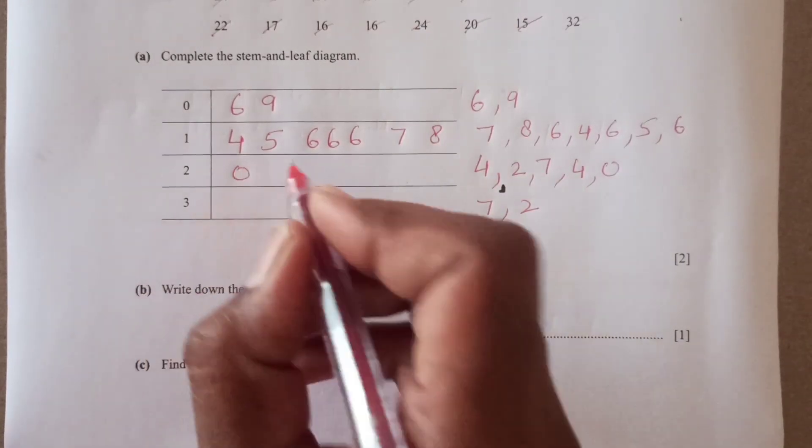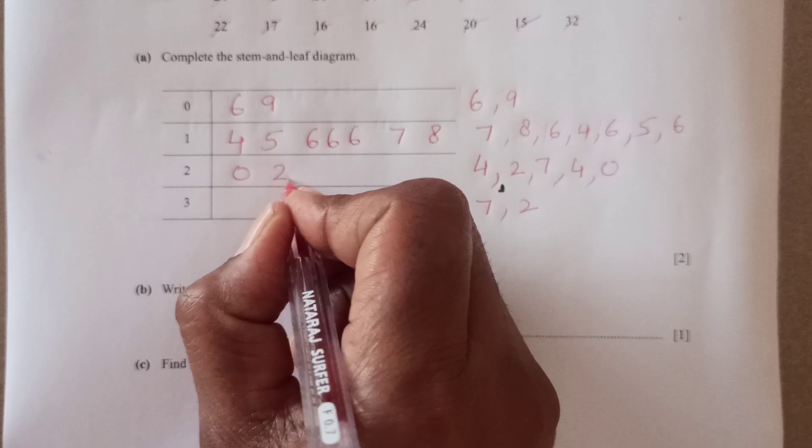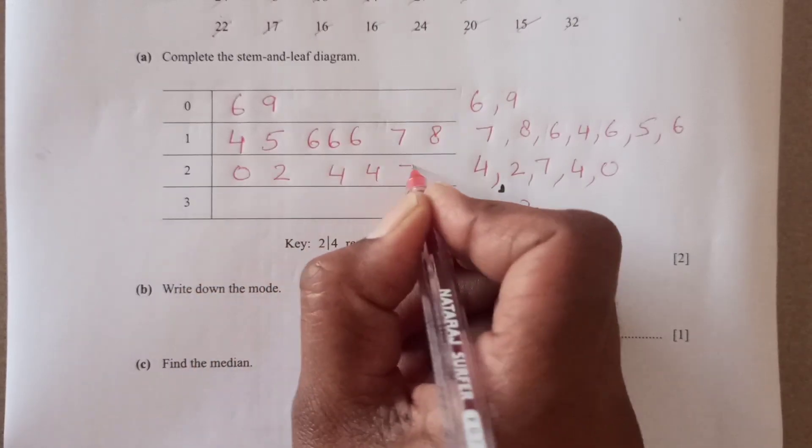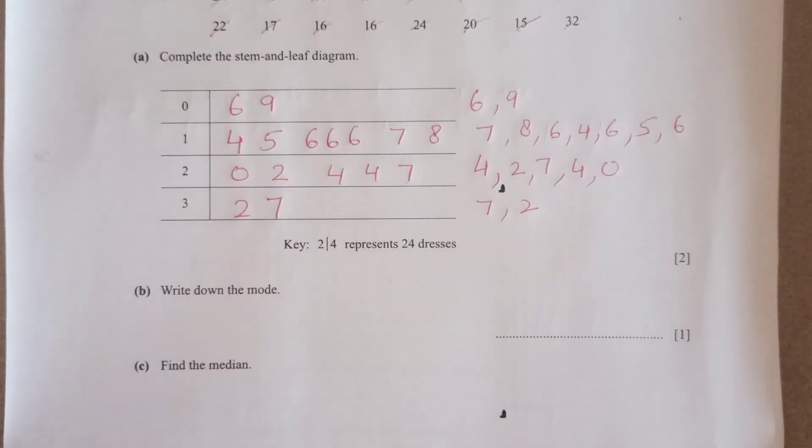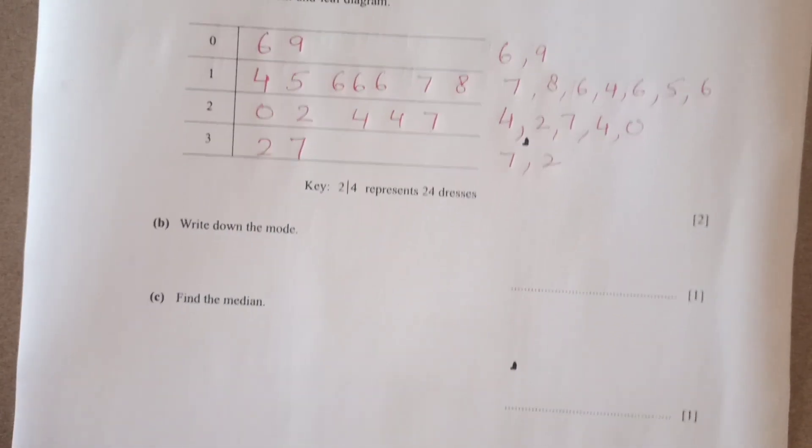Here we have 0. Then we have 2, 4, 4 and 7. This is 2, 7. This is how you are going to complete it.